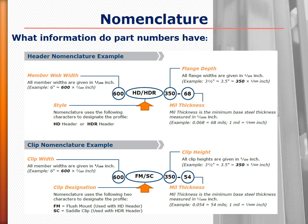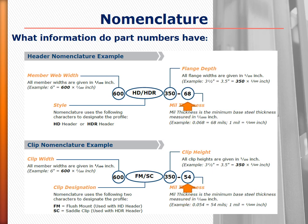It is very important to understand the product nomenclature for the Priceless Header and Quick Jam system. The first three numbers in the part number refer to the web of the member — the nominal width of the wall. The header and clips are slightly undersized compared to this dimension to help create a perfectly smooth and flush finish when finishing materials are applied. The next portion refers to the member itself: HD header, HDR header, KJS for quick jam studs, FM for flush mount clips, and SC for saddle clips.